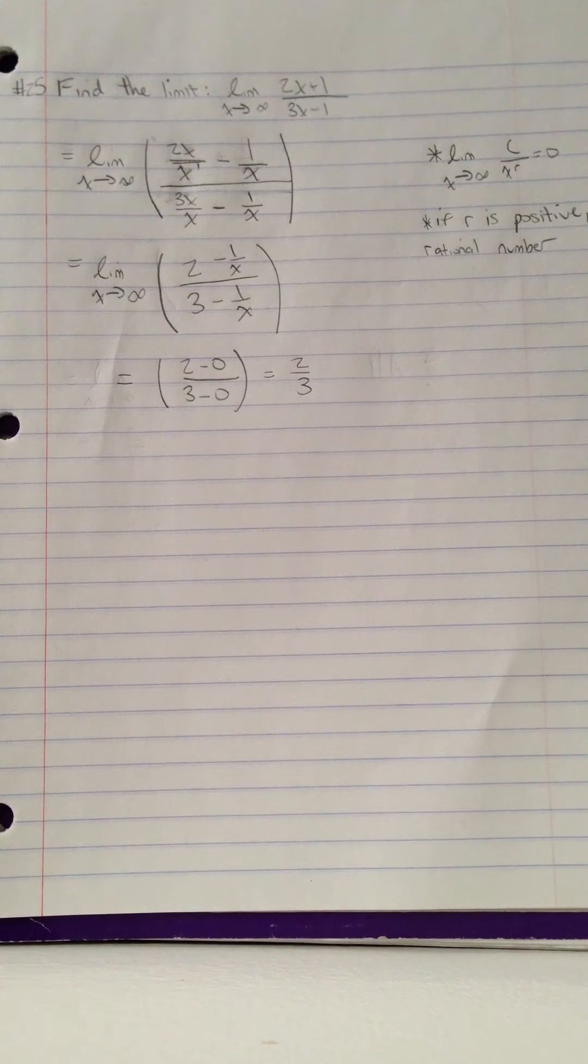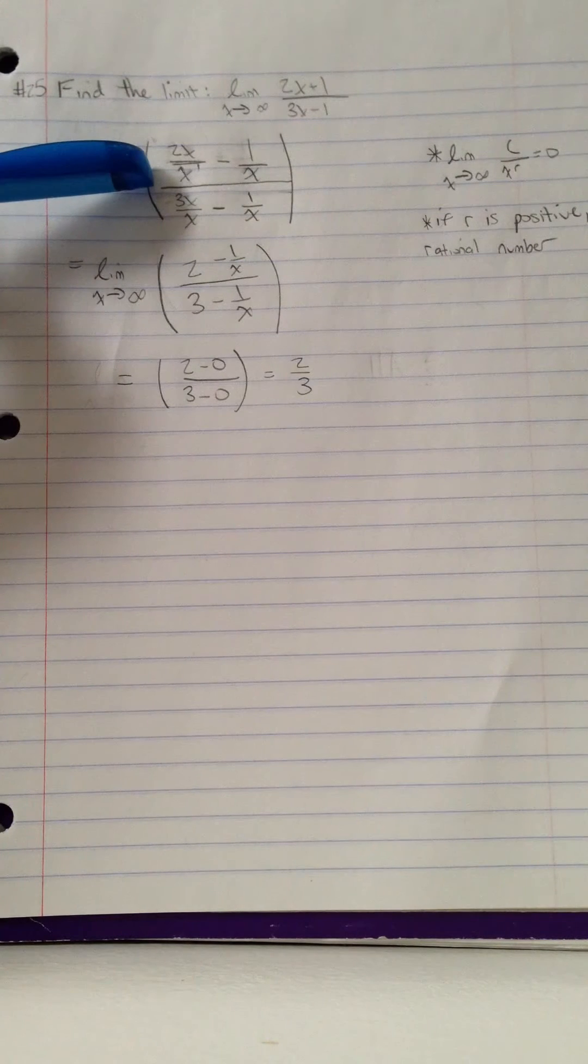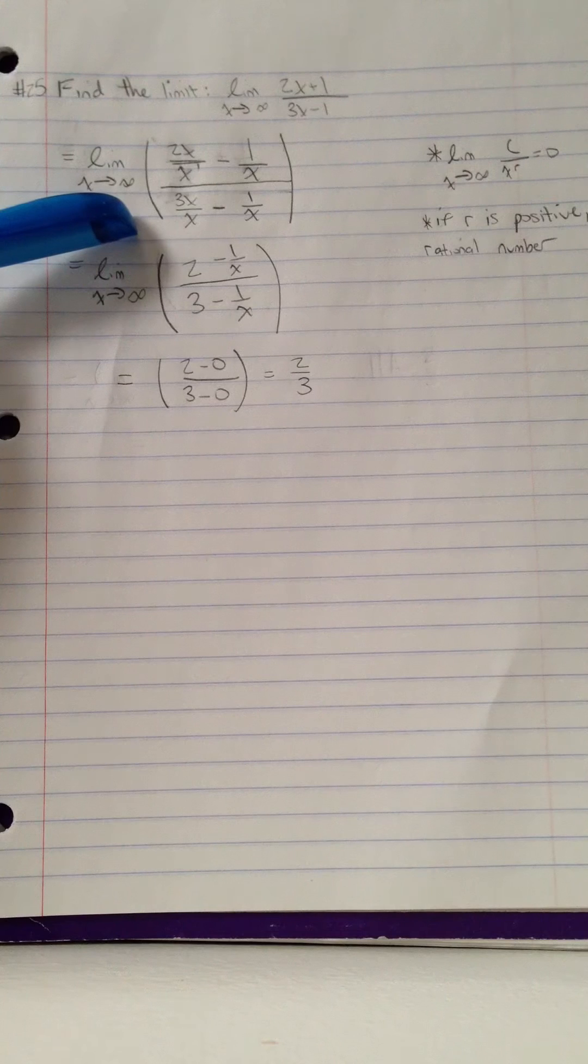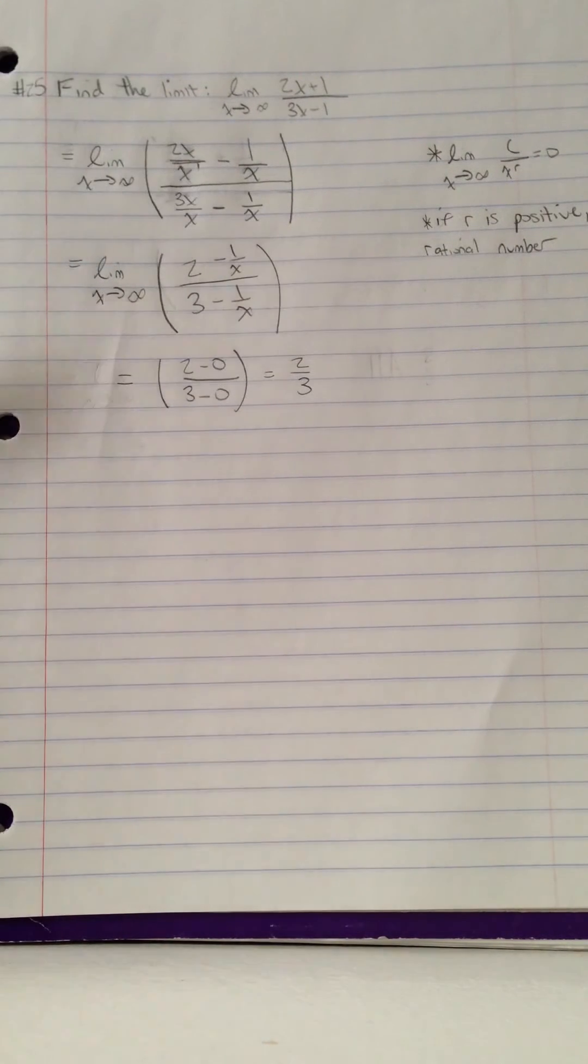So we can divide each term by x to the power of 1. 2x over x to the power of 1 minus 1 over x divided by 3x over x minus 1 over x.